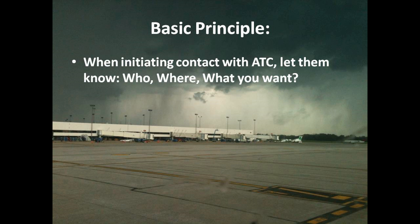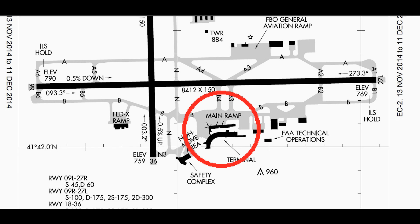Another basic principle of talking to ATC: whenever you talk to them, tell them who you are, where you are, and what you want. For example — who am I? November 123 Alpha Bravo. Where am I? At the terminal. What do I want? To taxi. Also, on first contact with ground, you tell them you have the ATIS. So you'd say: 'South Bend ground, November 123 Alpha Bravo, at the terminal, information Bravo, ready to taxi.' After that initial contact, you don't need to mention the ATIS again.